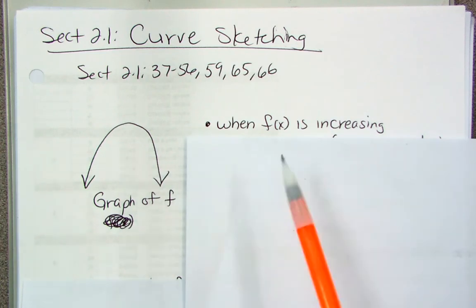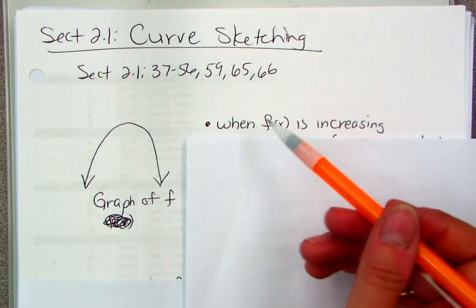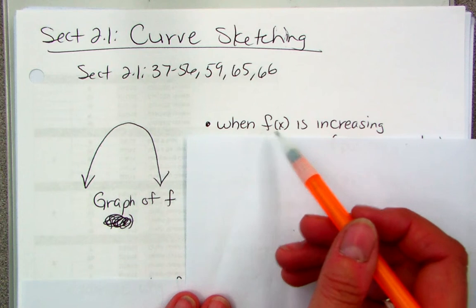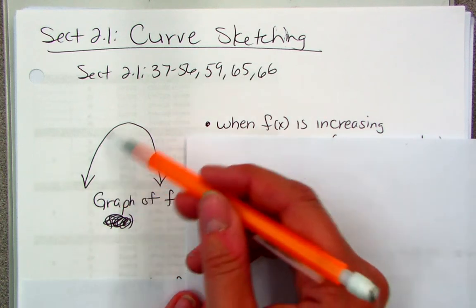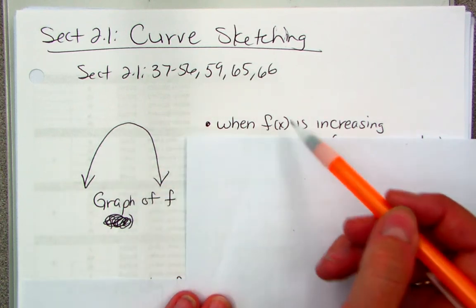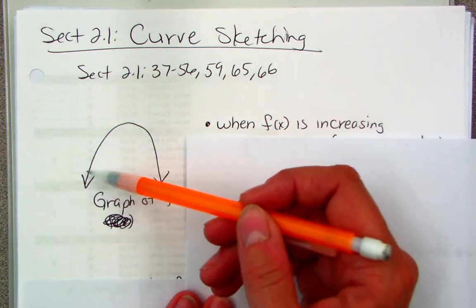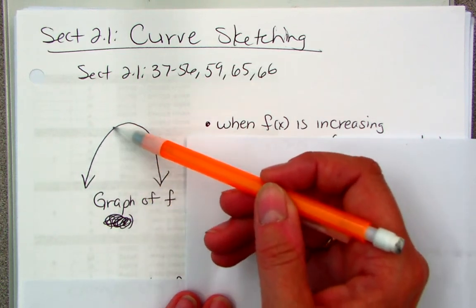When f(x) is increasing, so again, f(x) has to deal with this function. But f(x) are your y's for the f function. So take these points, and where are the y's increasing, increasing in value? Well, it's over here. The y's are going up. They're increasing.